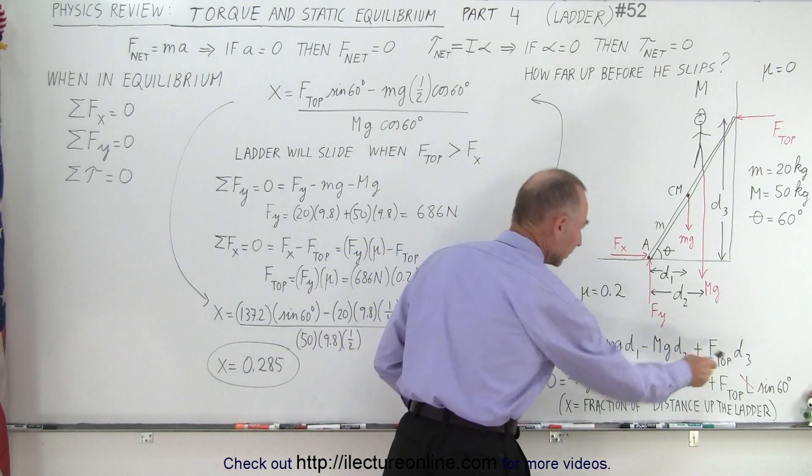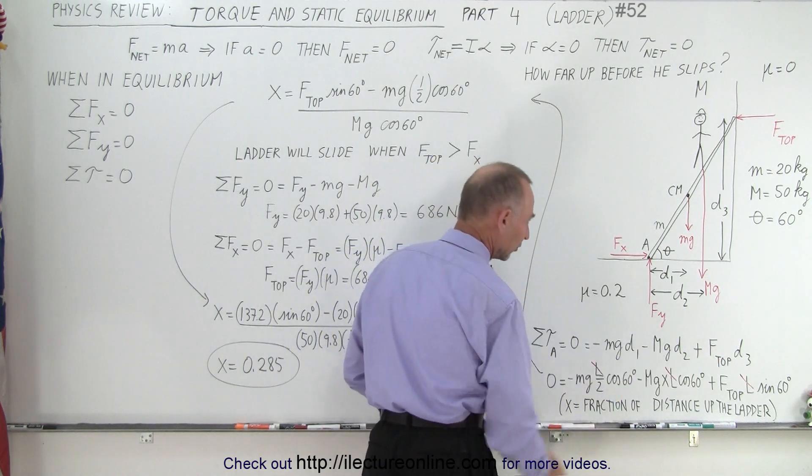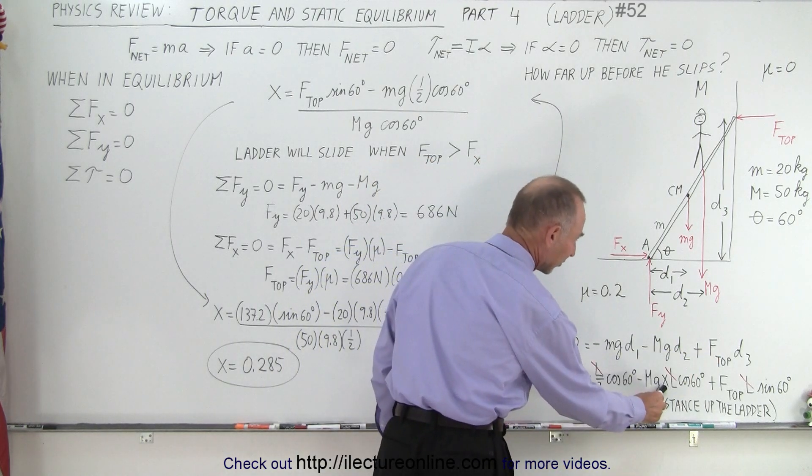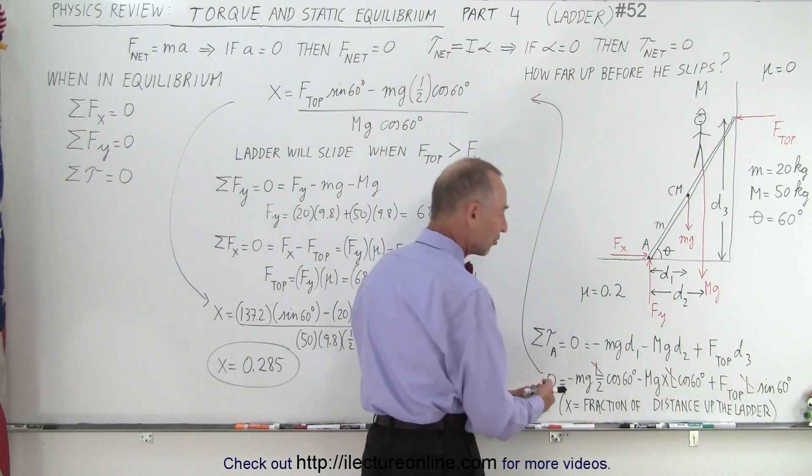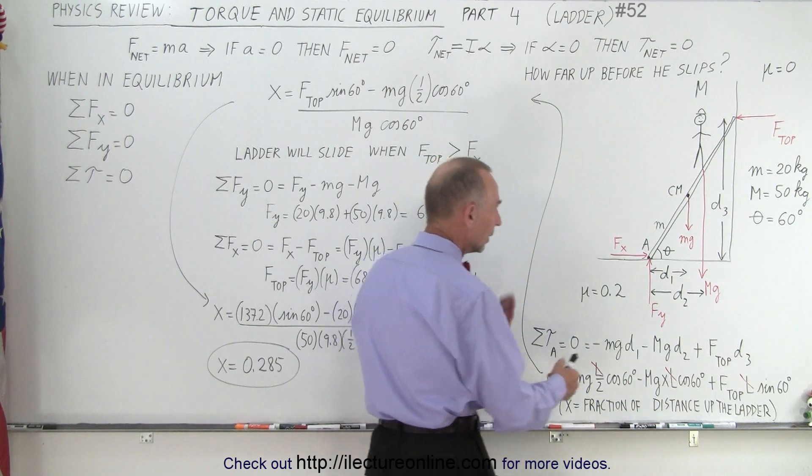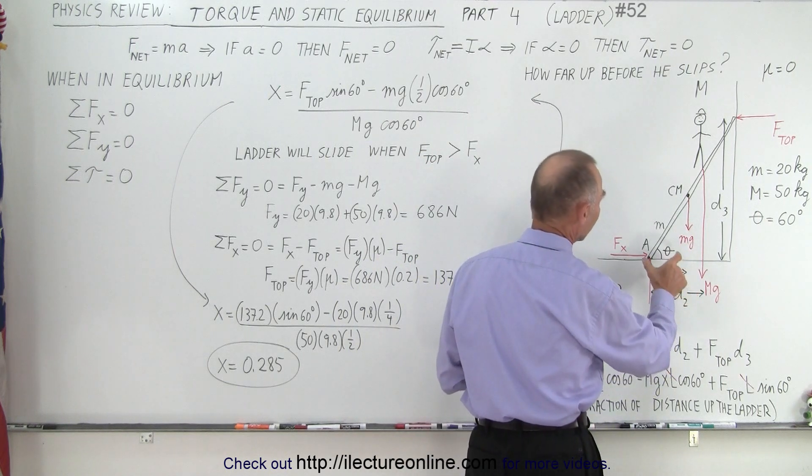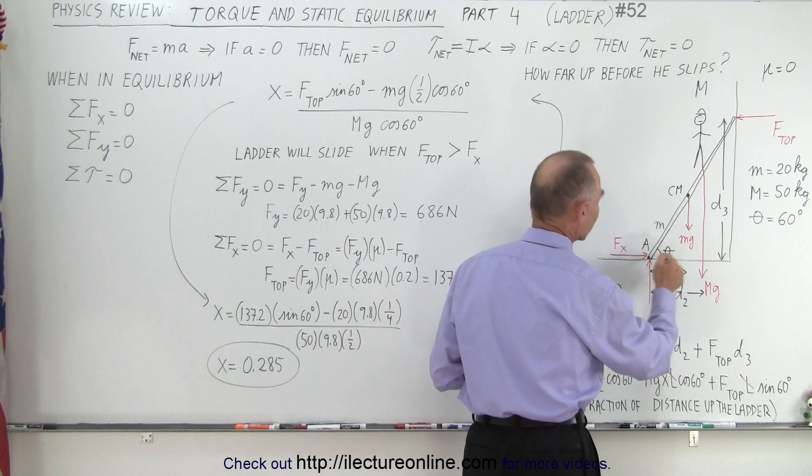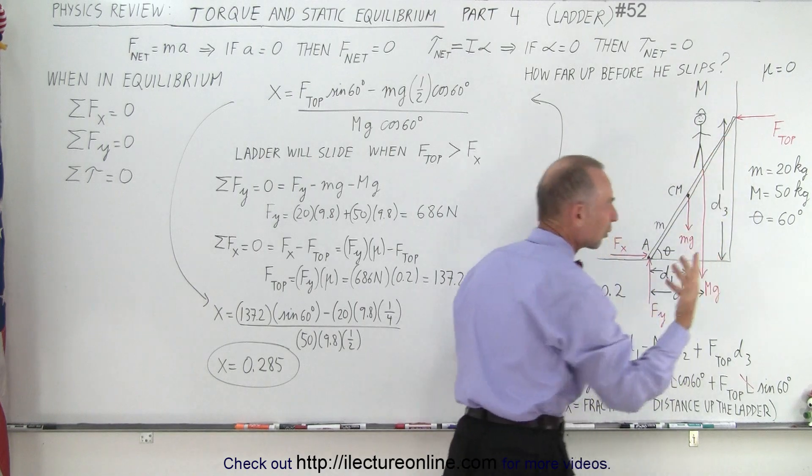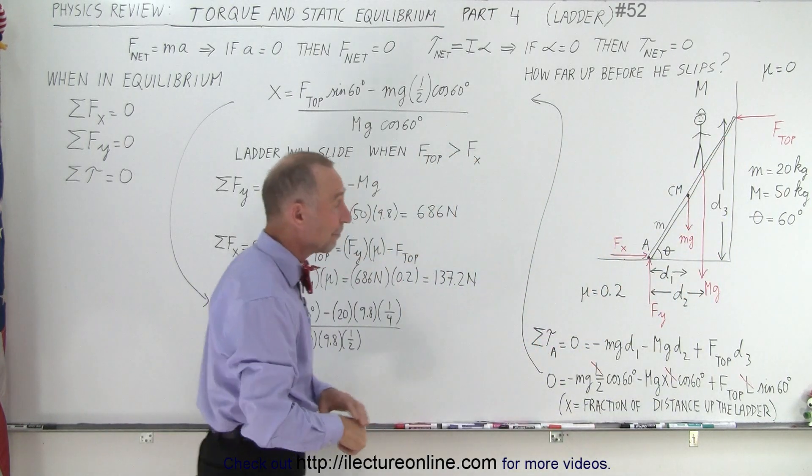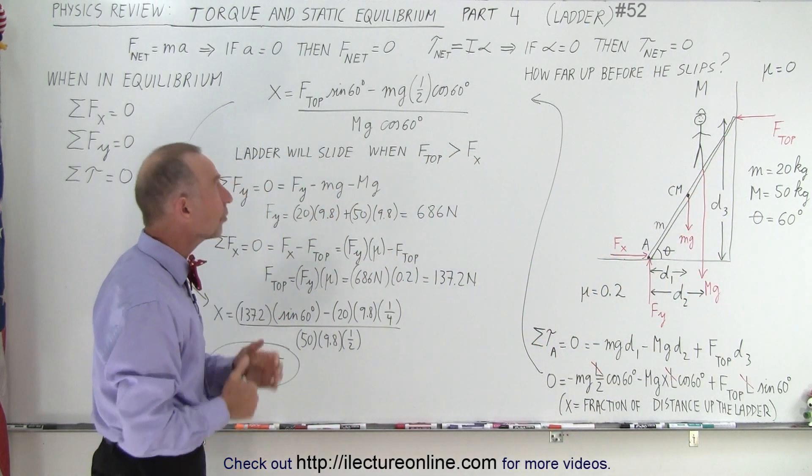Notice we don't need to know the length of the ladder. We plug in all the values and notice we use x here which is the fraction of the distance up the ladder that the person can go. So x is essentially the fractional distance from here to here or from here to here. It doesn't matter. It's the same fraction.